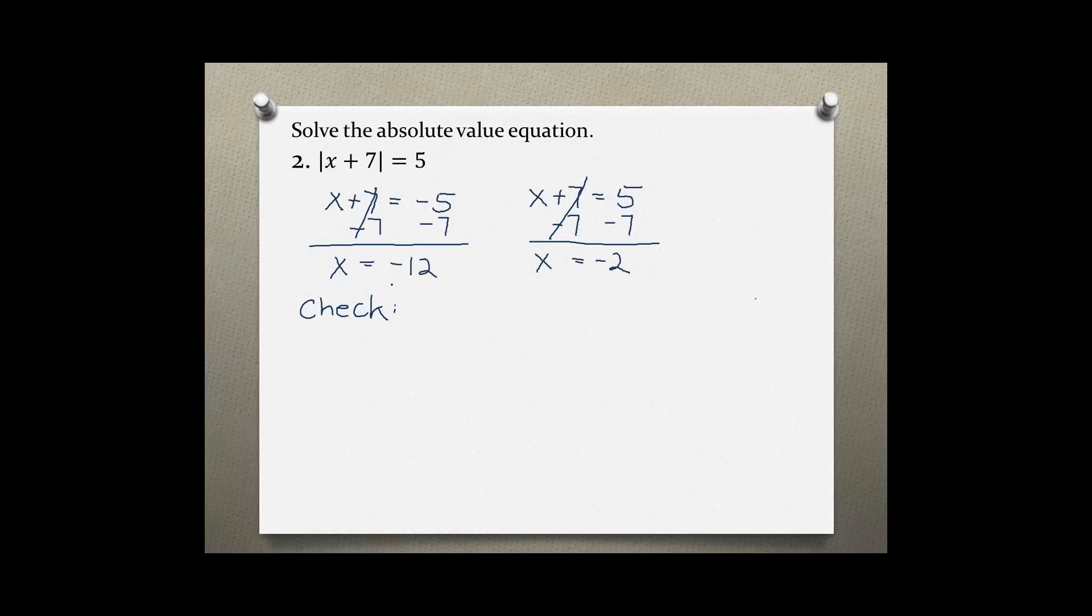Plugging in our x value from our first equation into the original one, the absolute value of negative 12 plus 7 equals 5. Negative 12 plus 7 is negative 5 inside the absolute value bars, and the absolute value of negative 5 is always positive, so 5 equals 5, which is a correct solution.